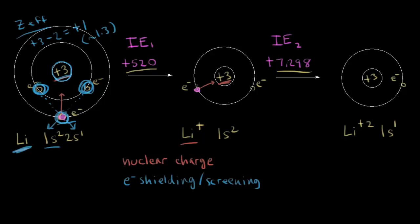For the lithium +1 cation, the electron we want to remove is a 1s electron. There are no inner shell electrons repelling it — the other 1s electron repels it only slightly. Because of this, the electron feels much more of the full +3 nuclear charge, resulting in a much greater attractive force holding it to the nucleus. Therefore, you have to apply much more energy to pull it away. This is why the second ionization energy is so much larger than the first.